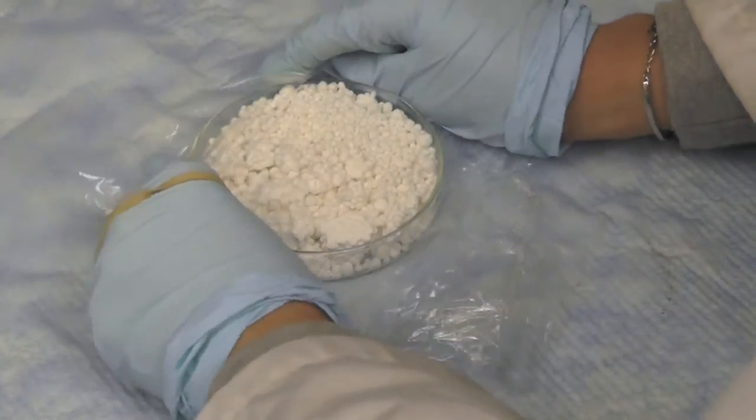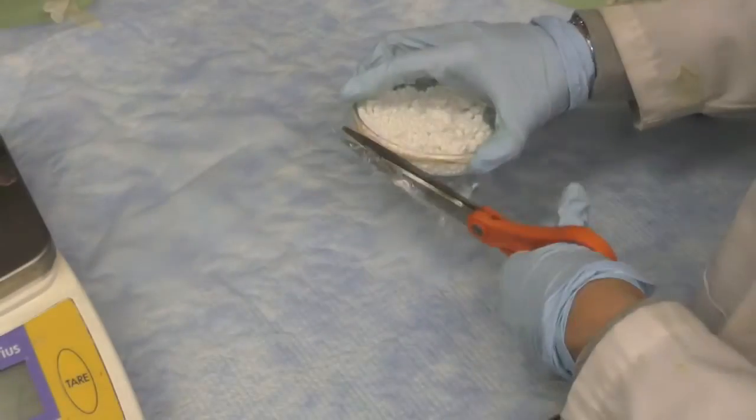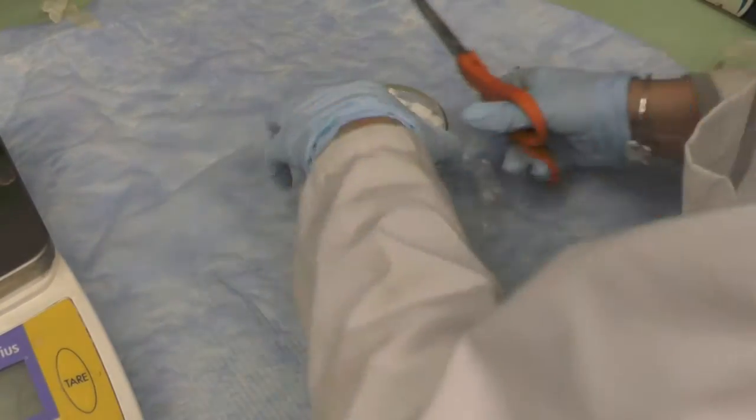Cover the petri plates with the films and secure using elastic bands. Trim off the excess films from each plate.